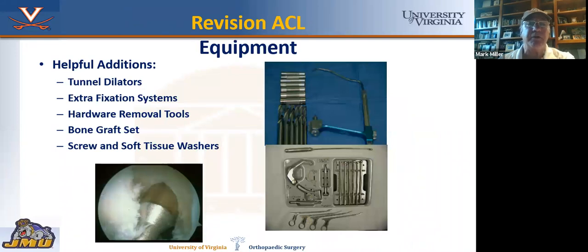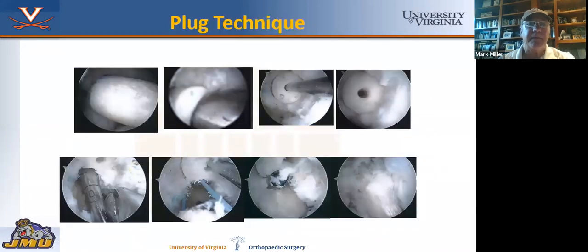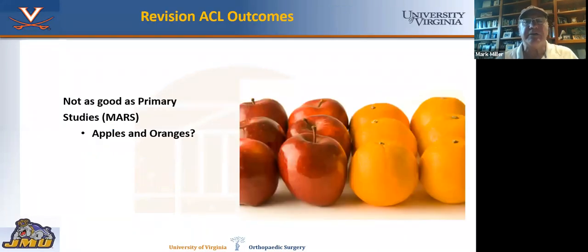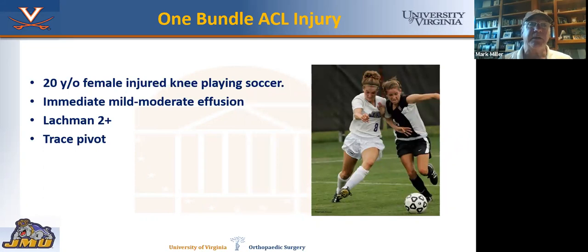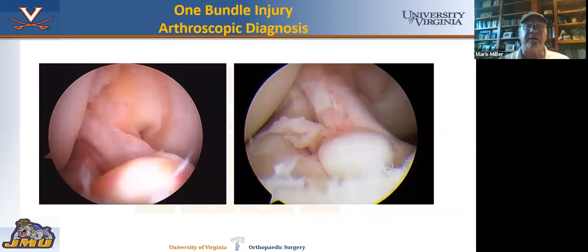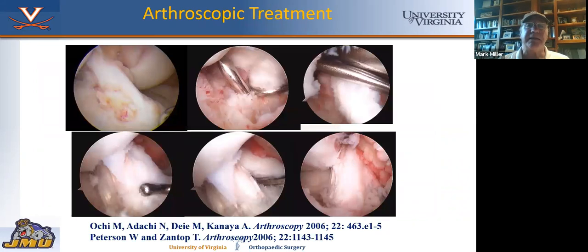For revision ACL, you need lots of equipment. The plug technique has been very helpful. Sometimes you can do one stage, sometimes two stage, and we've developed instruments to help with this. It's important to back up the fixation — use tie-over posts or buttons and more than one fixation device when needed. Revision ACL is not as good as primary ACL — the MARS group, a multicenter ACL revision study, has shown this, and we counsel our patients accordingly. Here's an example of a single bundle tear — only one bundle is torn while the other is intact. In this case, we were able to revise just one bundle and leave the other intact, which is technically difficult to do.